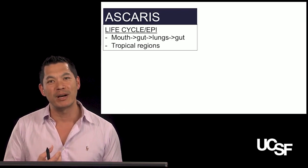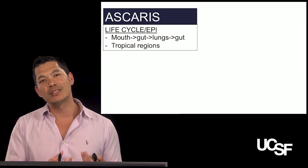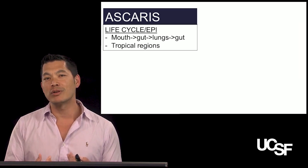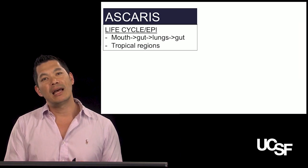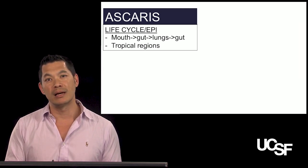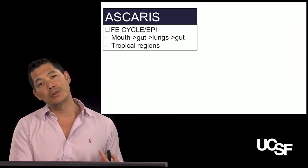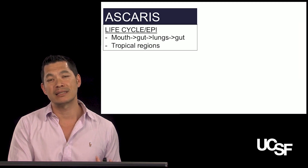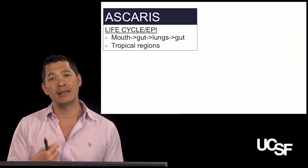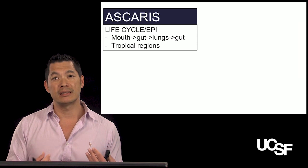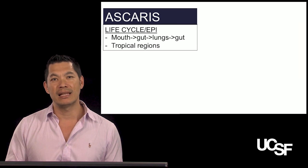So this is Ascaris. You ingest eggs through the mouth via contaminated food or drink. It goes into the gut. In contrast to pinworm, these organisms leave the gut — the larvae go across the mucosal membrane into the bloodstream, then straight to the lungs. Many of these parasites love the lungs, and Ascaris is no exception. It goes into the alveoli, up the bronchial tree, up the trachea, and then you swallow it. The larvae then mature into adult worms in the gut, mate, release eggs, and the cycle continues.